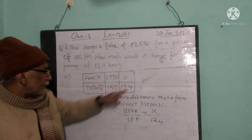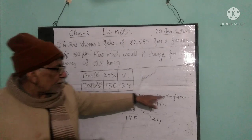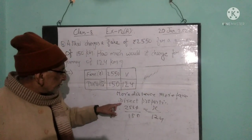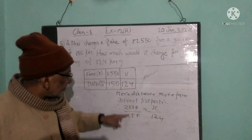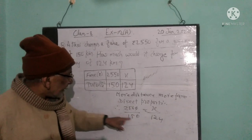More distance, more fare — this is direct proportion. So we set up: 2550 by 150.